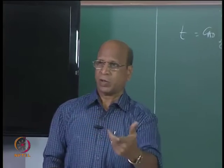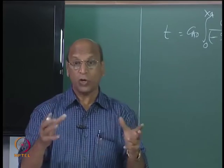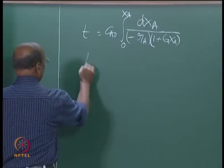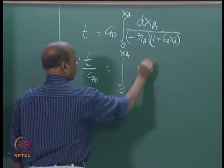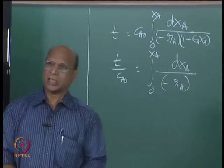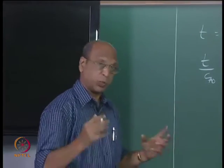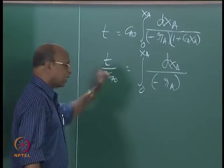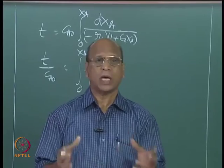You already seen that for mixed flow reactor and plug flow reactor you get volume as V by FA0. For similarity I will also write this one as T by CA0 equal to 0 to XA dxA by minus RA. T by CA0 is the general expression for a batch reactor which you are supposed to remember all the time. But what we have been thinking was that this T or this equation does not contain volume. But finally, we have to design the volume of the batch reactor.